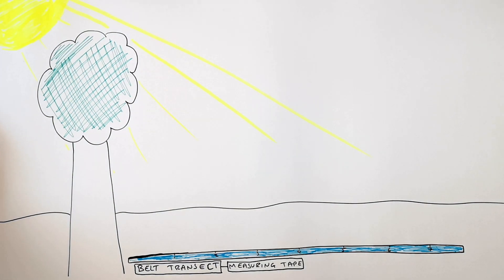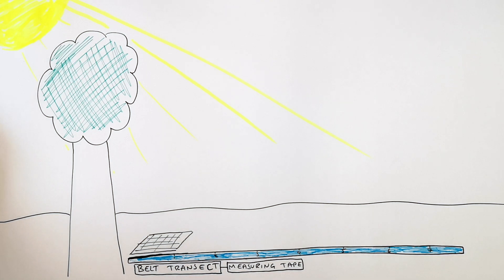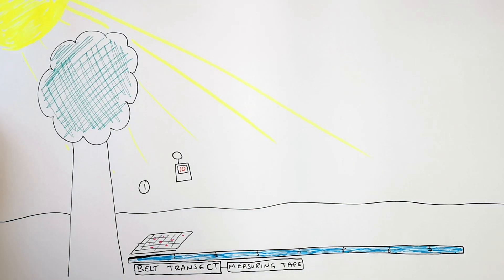You now lay the quadrat at the first point on the belt transect at zero metres away from where you're measuring. You now measure your abiotic factor, in this case light intensity. So we've got a light intensity of 10 and we count the number of flowers inside the quadrat at this point. In this case there are 8 flowers.